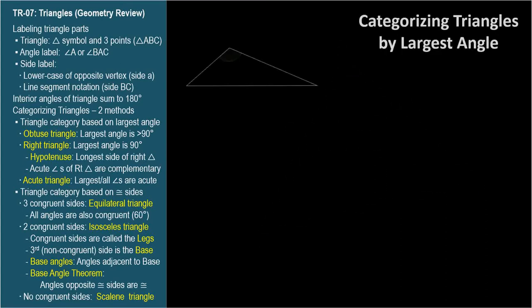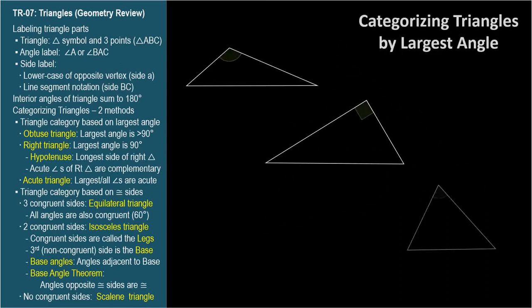There are two ways to categorize triangles. First, we'll cover categorization by angle — specifically the triangle's largest angle. When the largest angle is obtuse, the triangle is an obtuse triangle. Since the interior angles of a triangle add up to 180 degrees, a triangle can have at most one obtuse angle, and the other two angles will be acute.